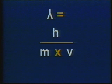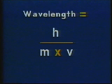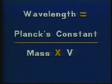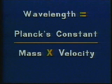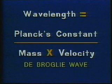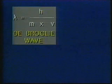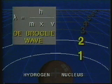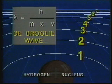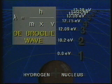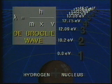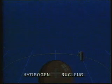De Broglie suggested that his matter waves would have a wavelength inversely proportional to the electron's momentum, which could be calculated by multiplying the mass of the electron by its velocity. De Broglie showed that by using his matter waves, he could predict each allowable orbit and its radius for the hydrogen atom, and also came up with the same energy levels as those predicted by the Bohr model.